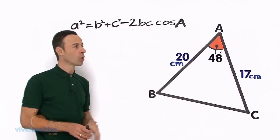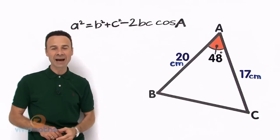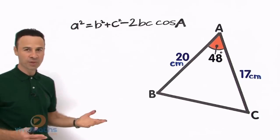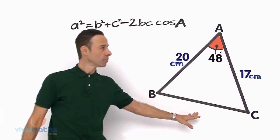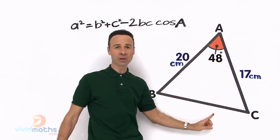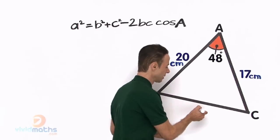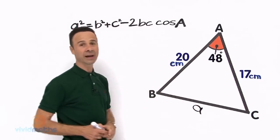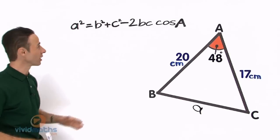So let us start off with stage number one. Let me introduce to you what each part of the formula are. So let us have a look here. We are looking for the length little a. Why? Because it is opposite capital A, which is the angle 48 degrees. So we are looking for this little a here. Let me write it down here, right there. There is our little a.